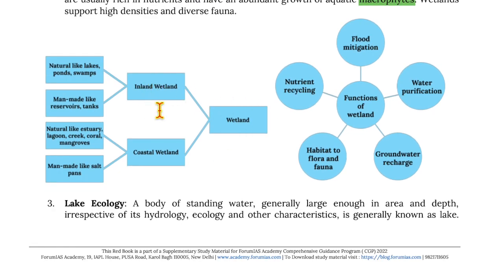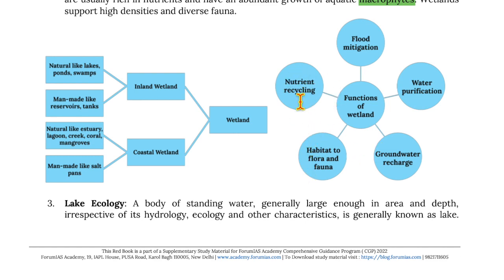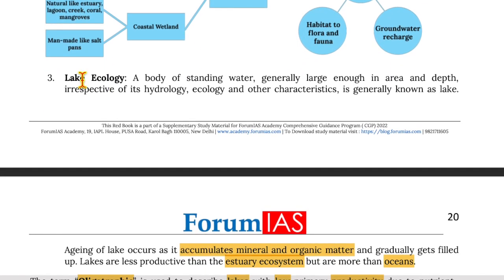Wetlands are classified as inland wetlands and coastal wetlands. Coastal wetlands can be natural (estuaries, lagoons, creeks, coral reefs, mangroves) or man-made (salt pans). Inland wetlands can be natural (lakes, ponds, swamps) or man-made (reservoirs, tanks). Functions of wetlands include flood mitigation, water purification, groundwater recharge, habitat for flora and fauna, and nutrient cycling.